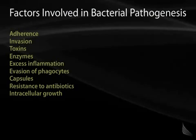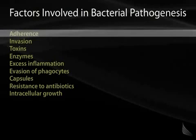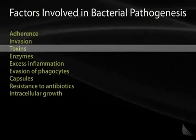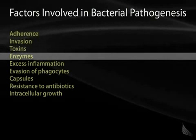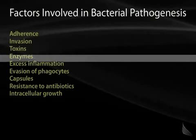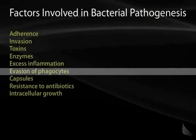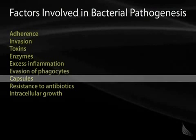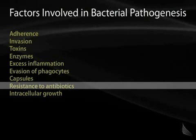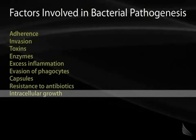We're going to talk about the factors involved in bacterial pathogenesis. Bacteria have evolved a number of features which help them cause disease. We're going to talk about adherence, invasion, the toxins they elaborate, the enzymes they use to cause disease, how they elicit excess inflammation, how they evade our phagocytosis and cell-mediated immunity, the capsules they use, their resistance to our antibiotics, and how they grow inside our cells.